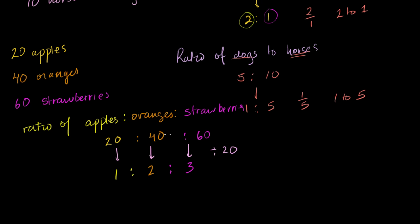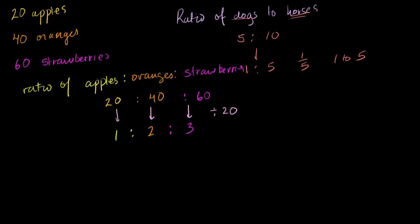If someone wanted to know the ratio of strawberries to oranges to apples, we just reorder. For every 3 strawberries, I have 2 oranges and 1 apple. So the ratio would be 3 to 2 to 1. The general idea is that whatever order someone asks for the items, the ratio is given in that same exact order.